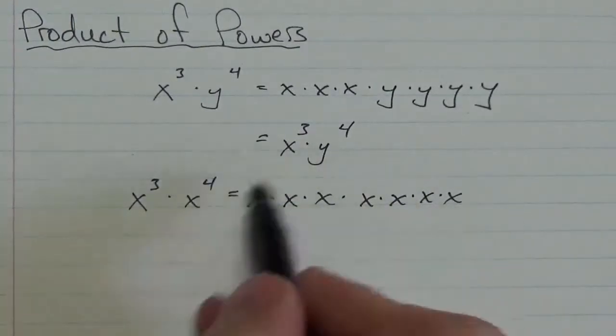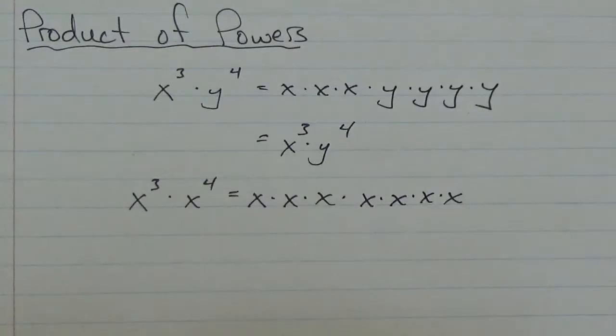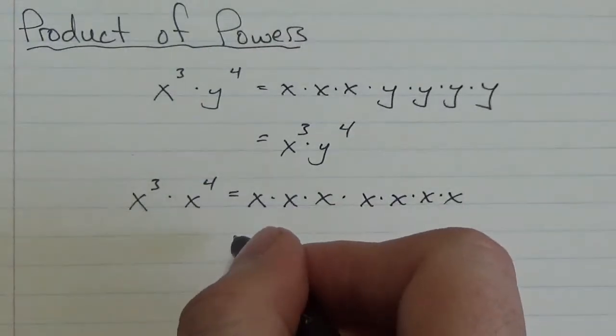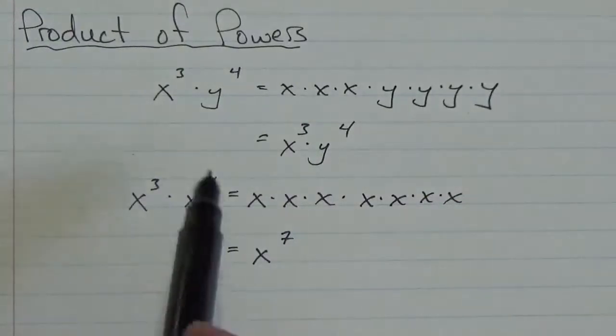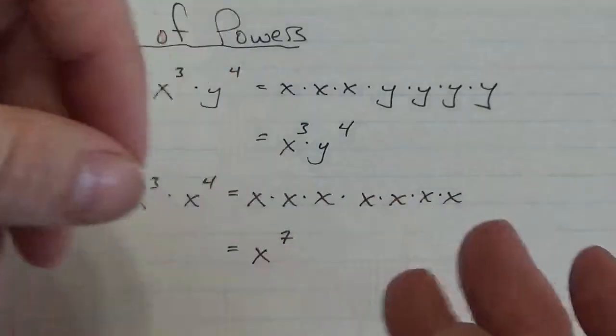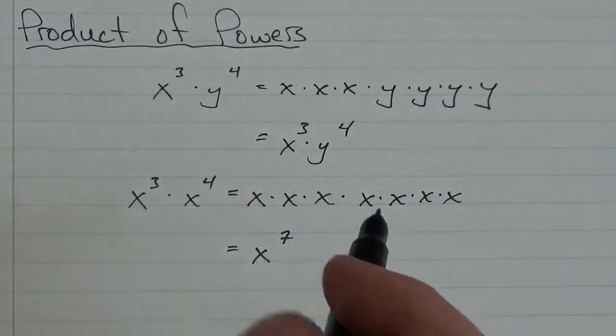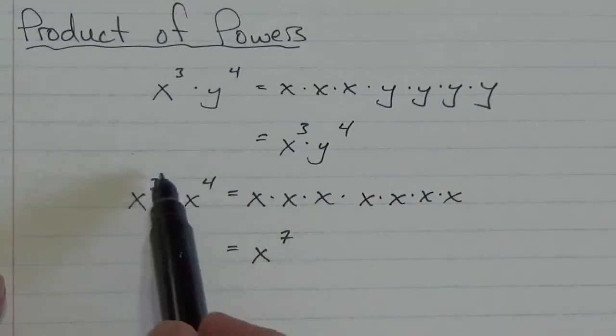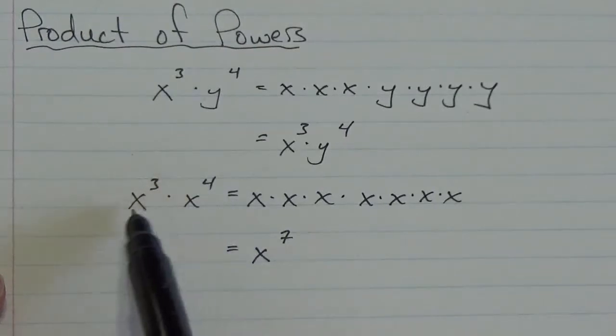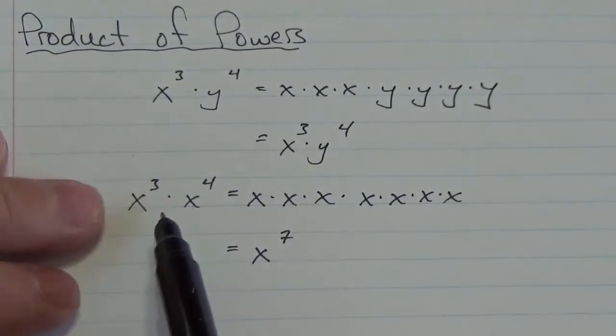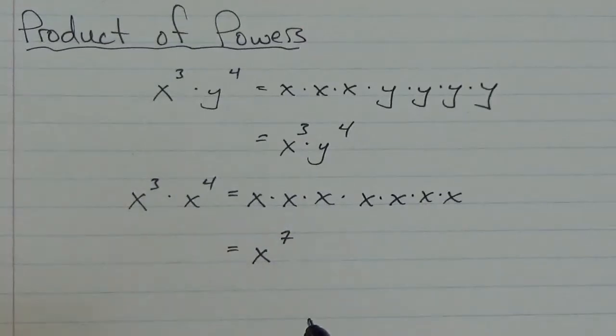Now I've got an expression where I see x as a factor seven times. And so this can actually be simplified down to just x to the seven. Now I could go through and always expand that out. But the easier way of looking at that is saying, well, look at this, this tells me that I've got three factors of x. Here I've got four factors of x. And because the bases are the same, all I really needed to do was add the exponents together.